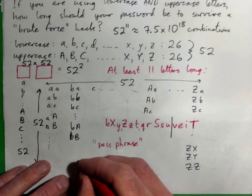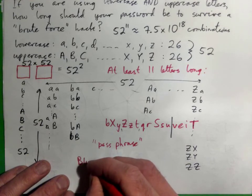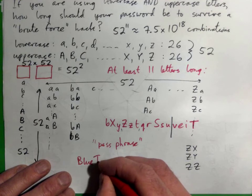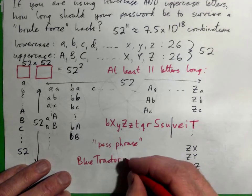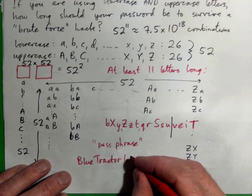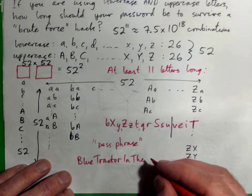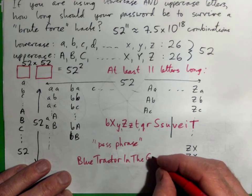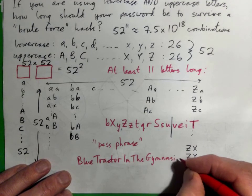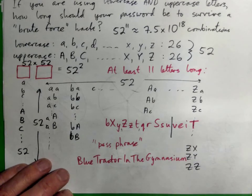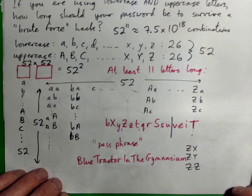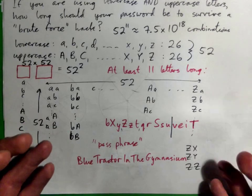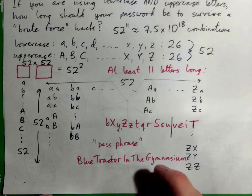So what about, let me just make one up on the spot: blue tractor in the gymnasium. Did I spell that right? I don't know. Anyway, there's my random password with big and little letters and it's plenty long, it's way more than 11, might be hard to guess, hopefully.